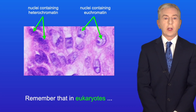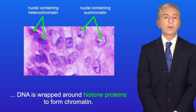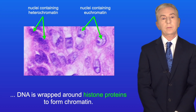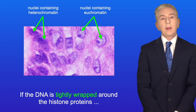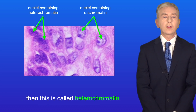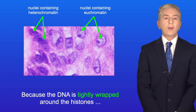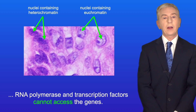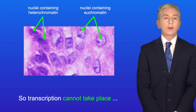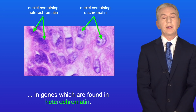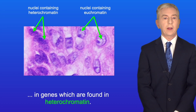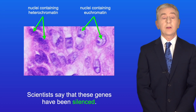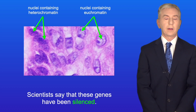In eukaryotes, DNA is wrapped around histone proteins to form chromatin. If the DNA is tightly wrapped around the histone proteins then this is called heterochromatin. Because the DNA is tightly wrapped around the histones, RNA polymerase and transcription factors cannot access the genes, so transcription cannot take place in genes found in heterochromatin. Scientists say that these genes have been silenced.